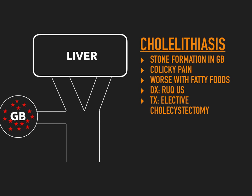The treatment for cholelithiasis is elective cholecystectomy. The word 'elective' is important — you don't have to do this right away; it's not an emergent procedure. The gallbladder coming out really depends on the symptoms of the patient. Also know the difference between cholesterol gallstones and pigmented gallstones: cholesterol stones form from supersaturation of cholesterol, while pigmented stones usually have to do with hemolysis.